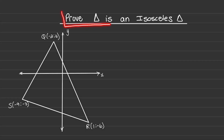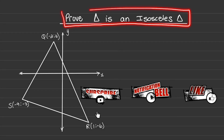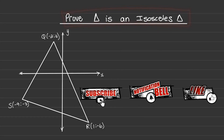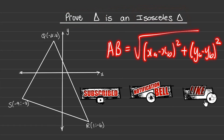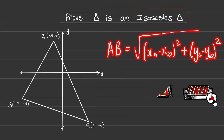This video is an application of analytical geometry, and we want to prove that the triangle is an isosceles triangle. You would have learned about the distance formula, which is the square root of the difference of x's squared plus the difference of y's squared.